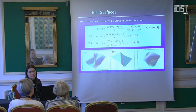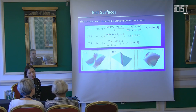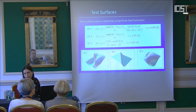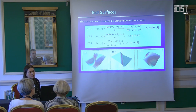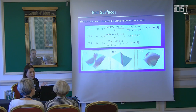Regarding test surfaces, the experiment was based on three surface types which can represent various forms of a real surface — real sea bottom. Various shapes of surfaces allow assessing this method for various degrees of surface curvature.